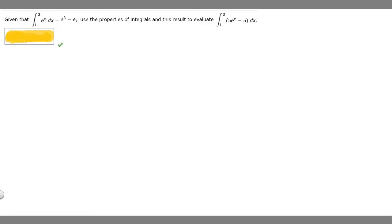So in this problem we're told that the integral from 1 to 3 of e to the x dx is equal to e to the 3 minus e. We're told to use the properties of integrals and this result to evaluate the integral from 1 to 3 of 5 times e to the x minus 5 dx.